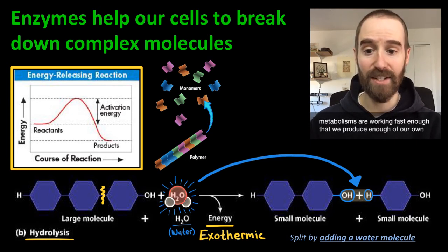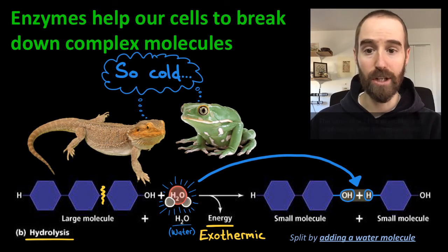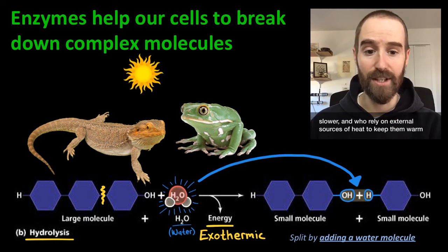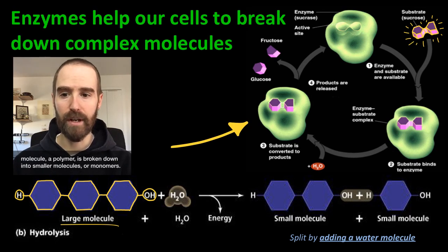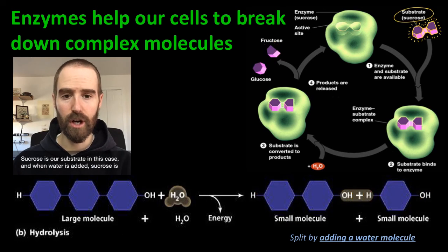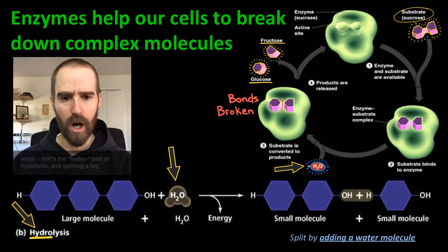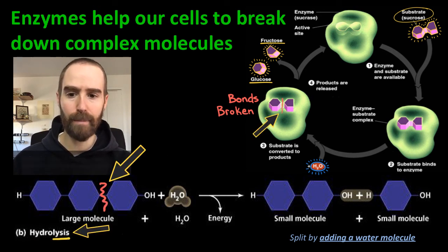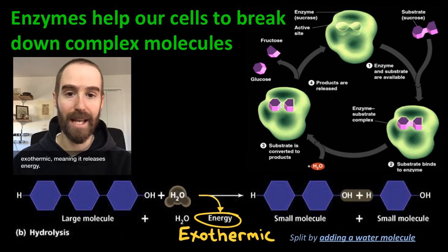This is what it means to be warm-blooded. Our metabolisms are working fast enough that we produce enough of our own internal heat to keep us warm and keep our internal temperature stable. The same is not true of reptiles and amphibians, who metabolize much slower and who rely on external sources of heat to maintain homeostasis. This model depicts an example of a hydrolysis reaction, in which sucrose — our substrate — is broken down into smaller molecules. When water is added, sucrose is split apart into a molecule of glucose and a molecule of fructose. Adding water is the hydro part, and splitting a big molecule is the lysis part of hydrolysis. This kind of reaction is exothermic, meaning it releases energy.